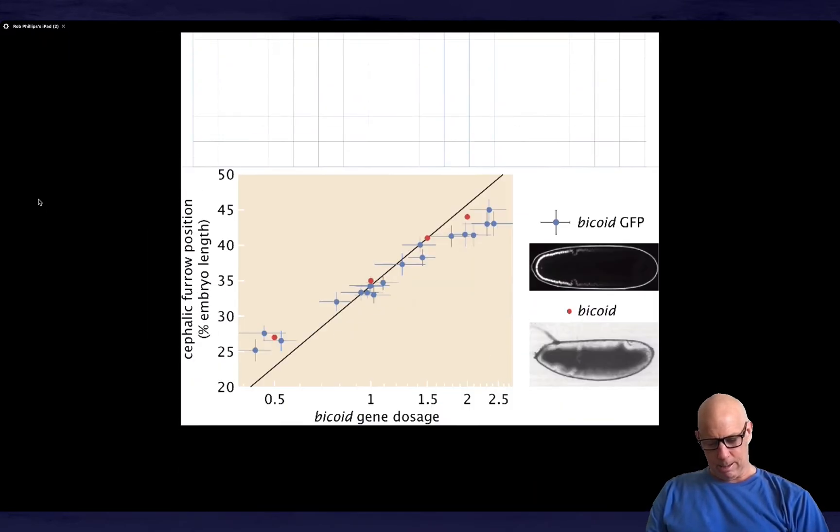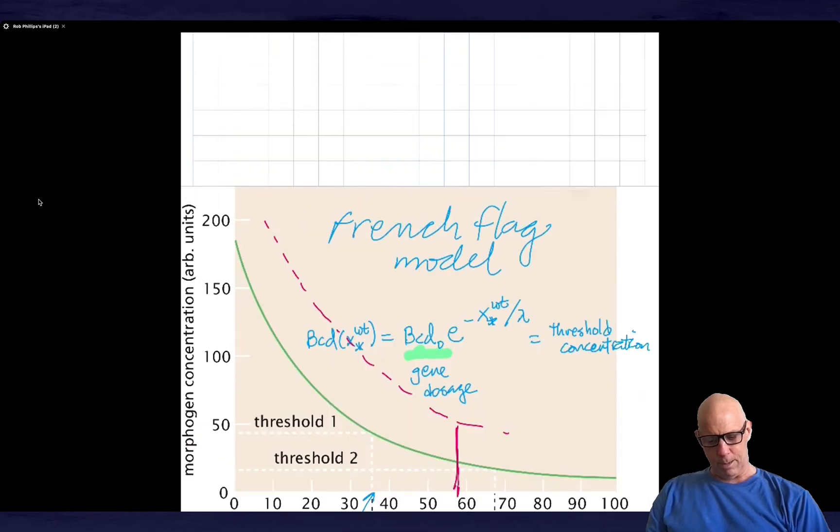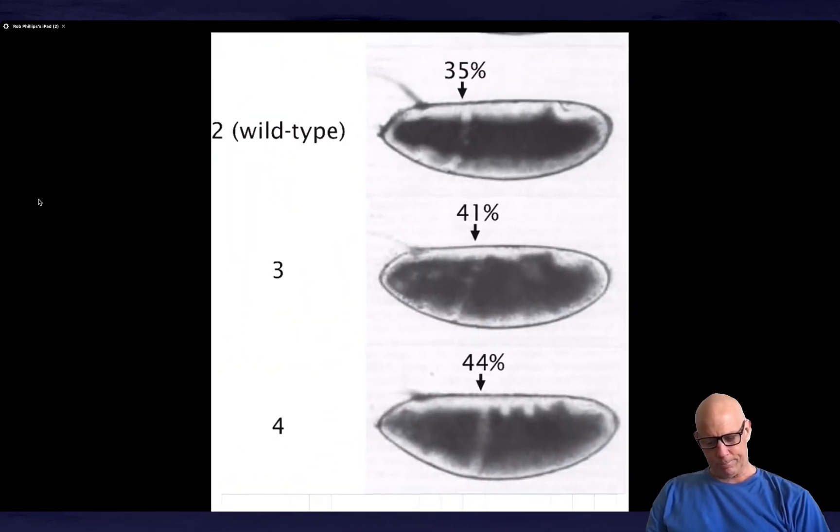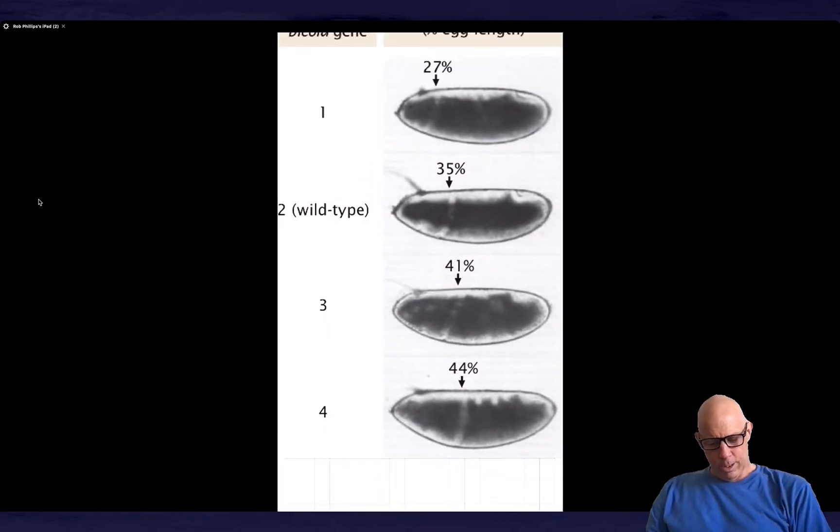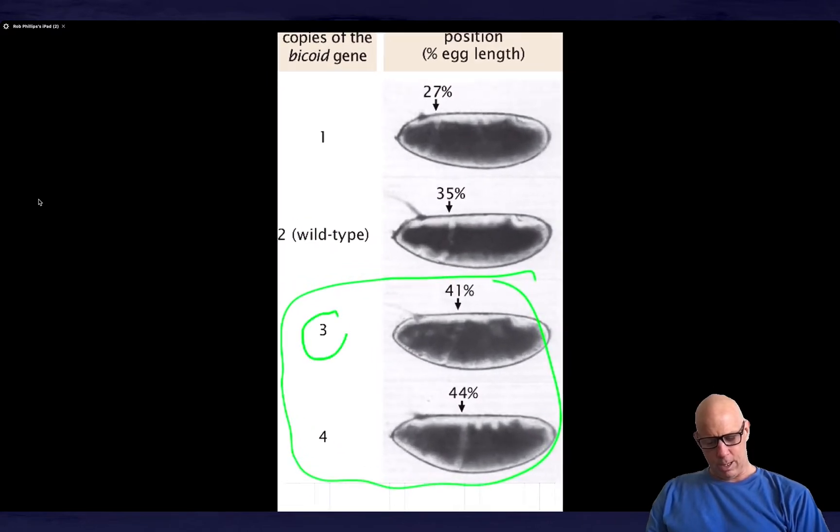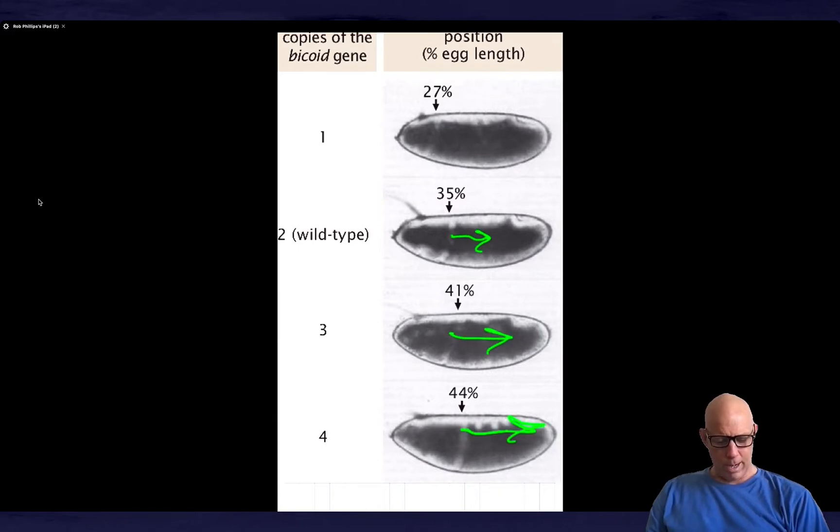And I think I might have an example of that for you to look at, which is right here. So notice in these two cases, so this is the gene dosage, is this column. So the gene dosage is increased, and that means that the cephalic furrow position moves to the right in correspondence with the intuition that I just described.